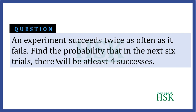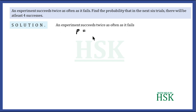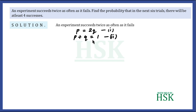To solve this question, since an experiment succeeds twice as often as it fails, the probability of success p would be equal to twice the probability of failure q. Because the experiment can result in either success or failure, as suggested in the question, for any experiment with two outcomes, the probability of success plus the probability of failure equals one.